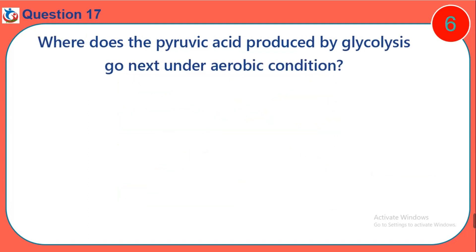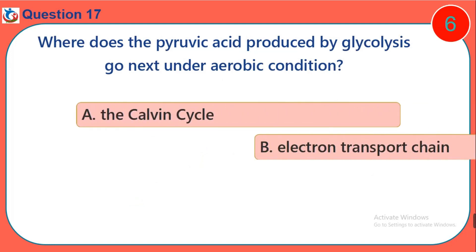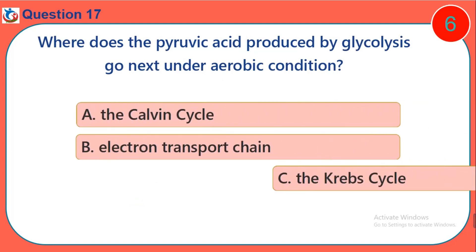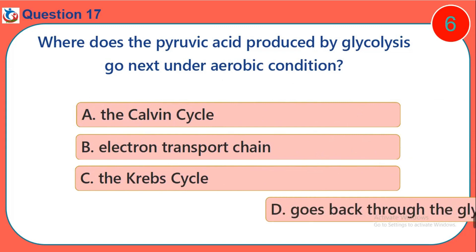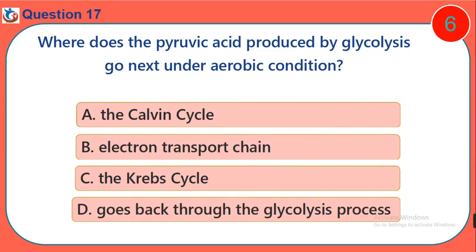Question 17. Where does the pyruvate acid produced by glycolysis go next under aerobic conditions? A. The Calvin cycle. B. Electron transport chain. C. The Krebs cycle. D. Goes back through the glycolysis process.